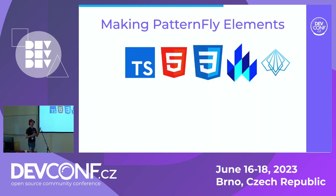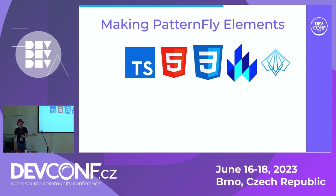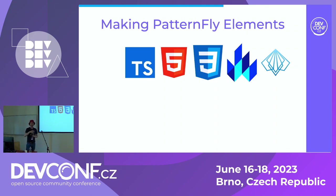So how do we make Patternfly Elements? The important thing to remember is that what I'm about to tell you about how we make the elements has no effect on how you use the elements. Our internal technical decisions don't limit you in terms of your options. We build our elements using TypeScript, standard HTML, standard CSS, the Lit web components framework — which is the spiritual successor to the original Polymer project — and we use the Patternfly upstream design tokens. But just because we chose TypeScript and Lit, you don't have to. You can use Patternfly Elements in a React app, a Vue app, a WordPress site, whatever you want.